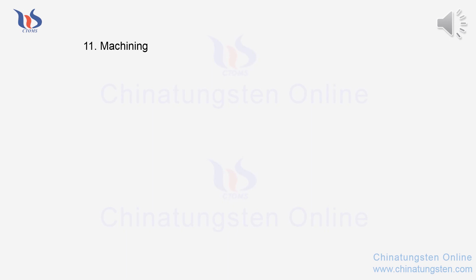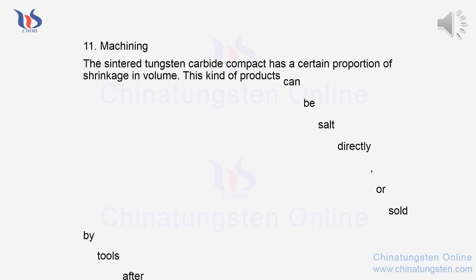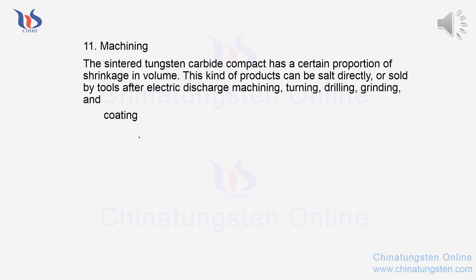Step 11 - Machining: The sintered tungsten carbide compact has a certain proportion of shrinkage in volume. These products can be sold directly, or further processed by electric discharge machining, turning, drilling, grinding, and coating before sale.